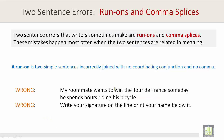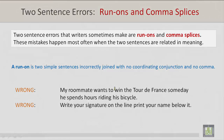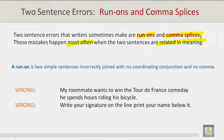Two sentence errors: run-ons and comma splices. Two sentence errors that writers sometimes make are run-ons and comma splices. These mistakes happen most often when the two sentences are related in meaning.